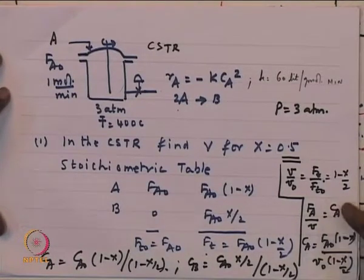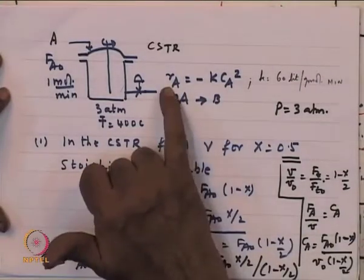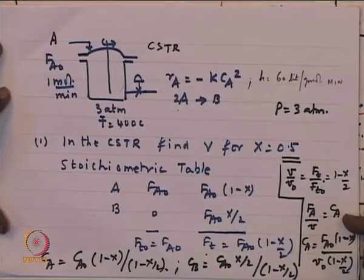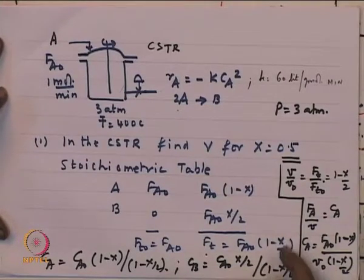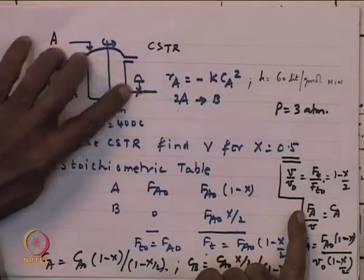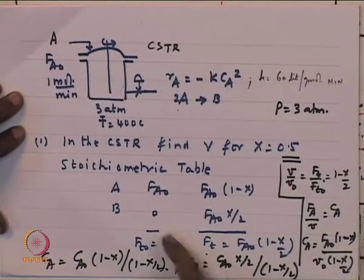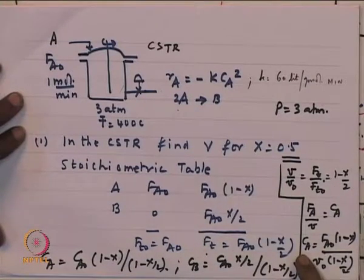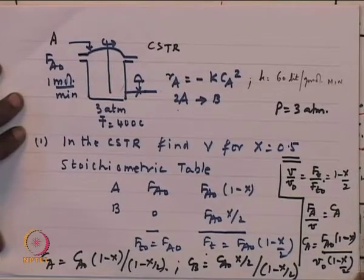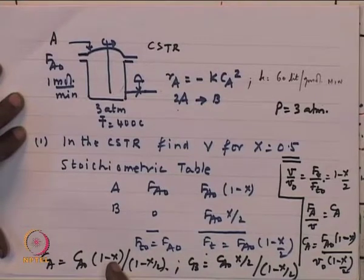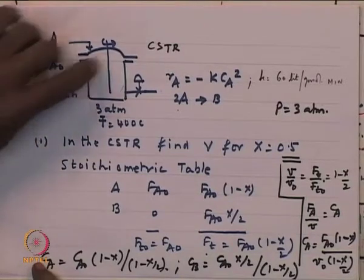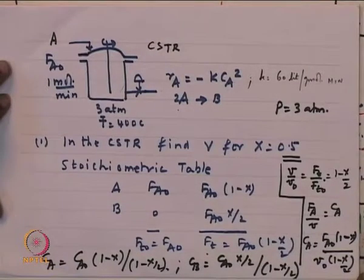With this, CA at the exit equals FA/(V) = FA0(1−x) / [V0(1 − x/2)] = CA0(1−x)/(1 − x/2). Similarly, CB equals FA0·x/2 divided by V0(1 − x/2), giving CB = CA0·x / [2(1 − x/2)]. We have now expressed the concentrations in terms of conversion, accounting for the volume change.